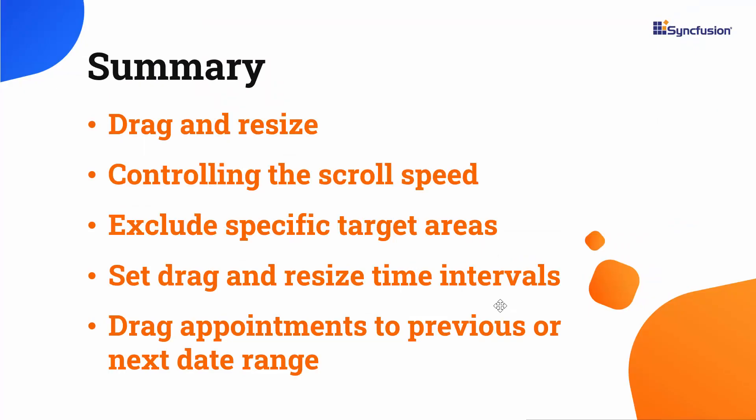Alright, let me summarize the important points. We have seen the different customizable options available for both drag and resize actions of scheduler events, how to control the scrolling speed while dragging or resizing, how to exclude drag and drop on specific target areas, how to auto navigate date ranges while dragging, and how to set different drag and resize time intervals. You can download the working example from the GitHub link in the description below. You can also get a free license key for our complete Blazor products if you fit our community guidelines — check the description link to see if you are eligible. In my next video, I'll explain how to drag and drop an external item into the Blazor scheduler. If you find this video useful, click the like button and subscribe to our channel. Thank you for watching.